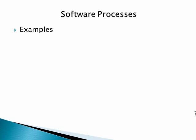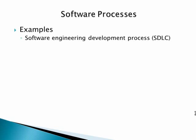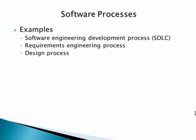Examples of software processes include the software development life cycle (SDLC), the software requirement engineering process, the design process, and the quality assurance process. There are a number of processes in each of these categories, including design processes, quality assurance processes, and requirement engineering processes.